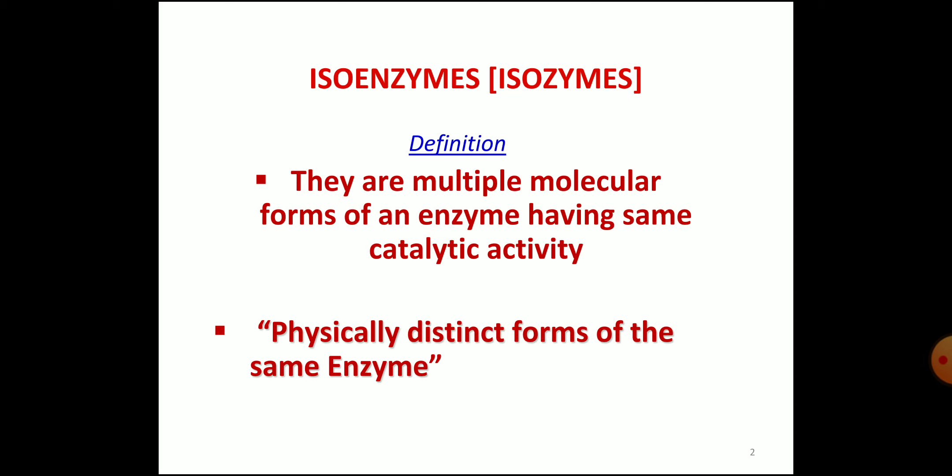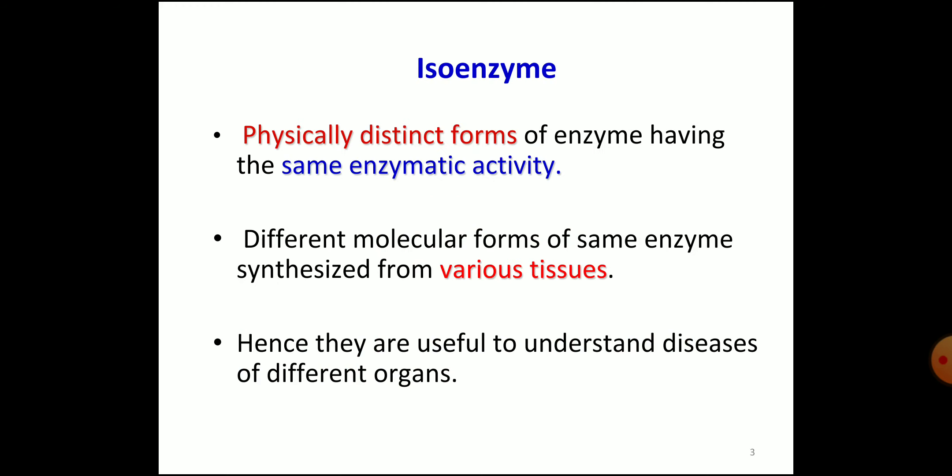They are different in their primary structure and kinetic properties. The definition is: they are multiple molecular forms of an enzyme having the same catalytic activity, or physically distinct forms of the same enzyme — physically distinct yet catalyzing the same enzyme activity. Different molecular forms of the same enzyme are synthesized from various tissues, hence they are useful to understand diseases of different organs.